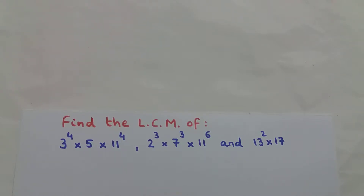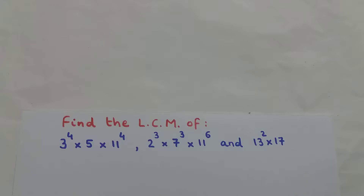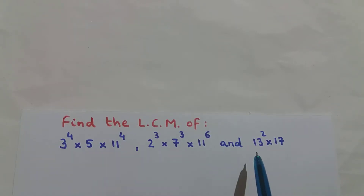Welcome. The question says: find the LCM of 3 raised to the power of 4 multiplied to 5 multiplied to 11 raised to the power of 4; 2 raised to the power of 3 multiplied to 7 raised to the power of 3 multiplied to 11 raised to the power of 6; and 13 squared multiplied to 17. So we have to find the LCM of these three expressions.